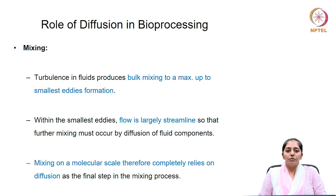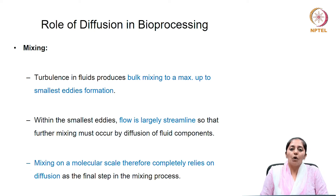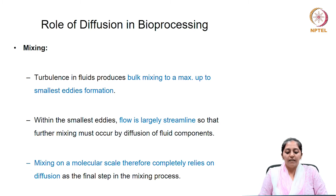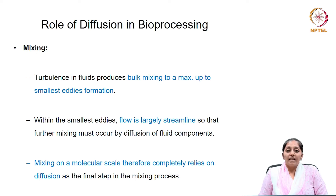Now let us see the role of diffusion in bioprocessing. First is mixing. Turbulence in fluids produces bulk mixing to the maximum up to the smallest eddy formation. Within this smallest eddy, the flow is largely streamline. Further mixing occurs only by diffusion of the fluid components. Mixing on a molecular scale therefore completely relies on diffusion as the final step in the mixing process.